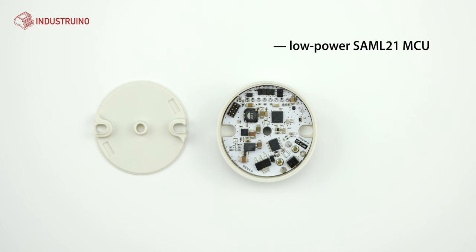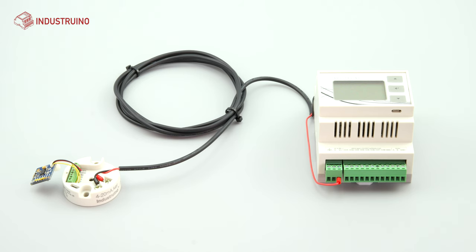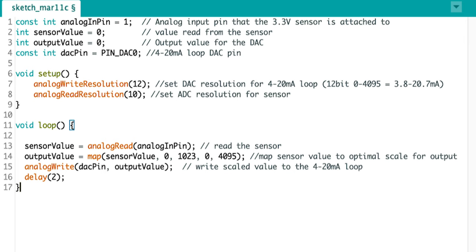420Maker is powered by an ultra low power SAML21 microcontroller which is compatible with all common Arduino sensor libraries. A sensor can be turned into a long distance 420mA sensor within a couple of minutes. All it takes is mapping the sensor value onto the DAC using the map function.